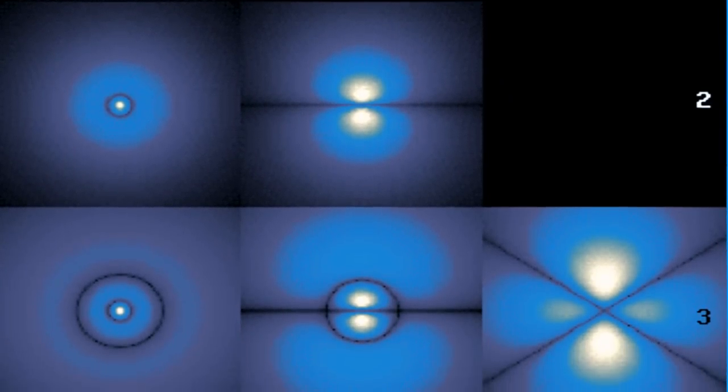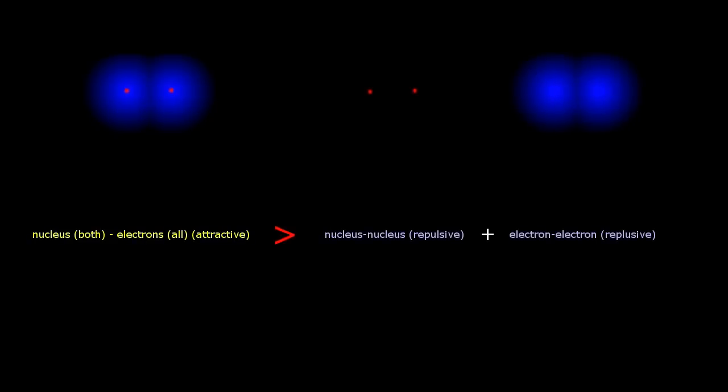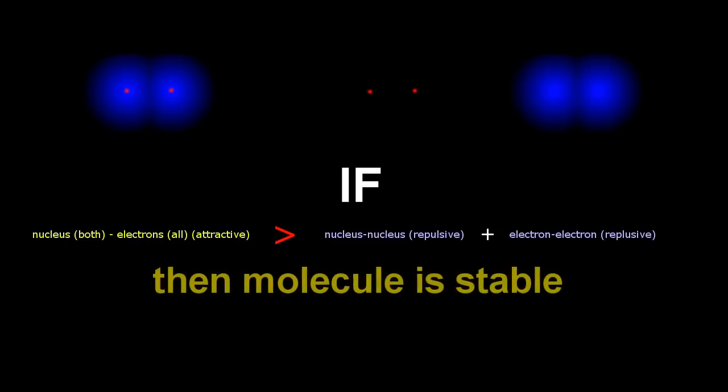Now, sometimes it actually turns out that it's more favorable for two nuclei to share some electrons. That is, there is more favorable interactions between the two nuclei and their combined electrons than there is repulsion between the electrons of the two atoms and the repulsion of both of the nuclei. And when this happens, the configuration of two or more atoms stuck together in a stable form, we call a molecule.